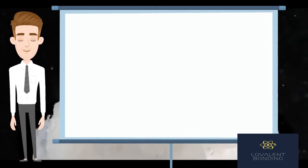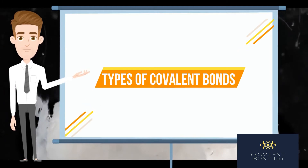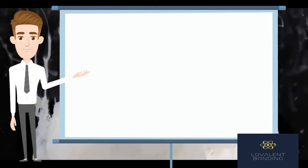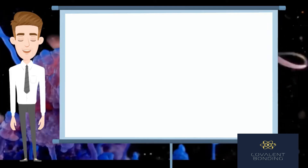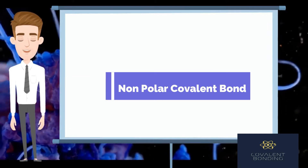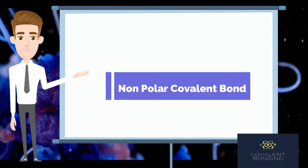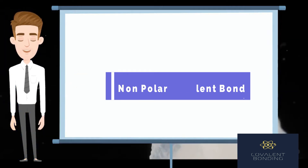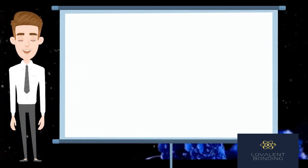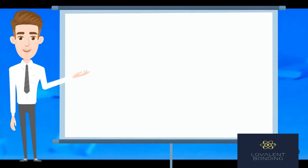The types of covalent bonds include the non-polar covalent bond. In a bond between two identical atoms, the electrons are shared equally between the atoms. No separation of charge takes place in the molecule. This type of bond is called a non-polar covalent bond.